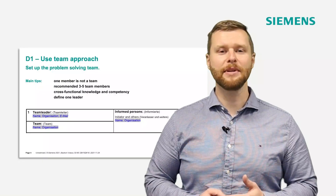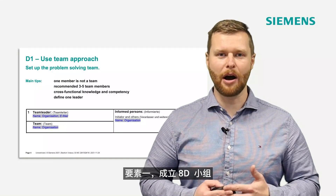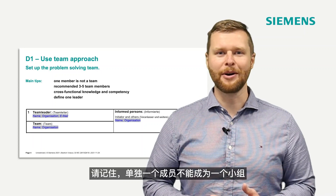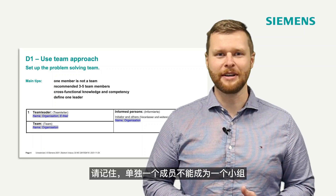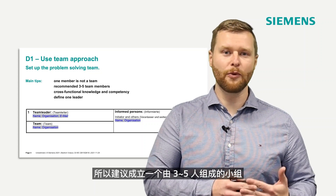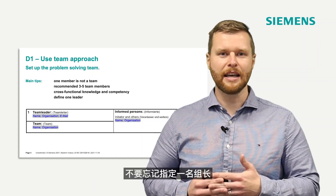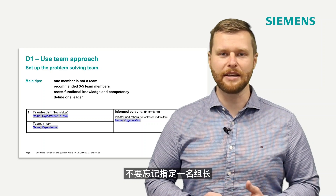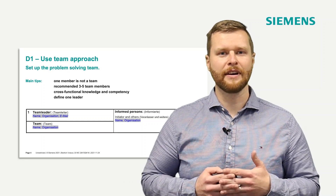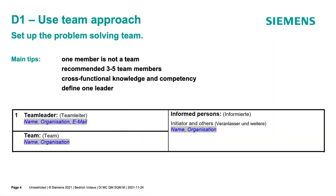In discipline number one, it is about the nomination of the team. Always remember: one member is not a team. It is recommended to nominate from three to five persons, and every time nominate also a team leader. This team should have enough time, willingness, and also the competencies regarding the problem solving process.